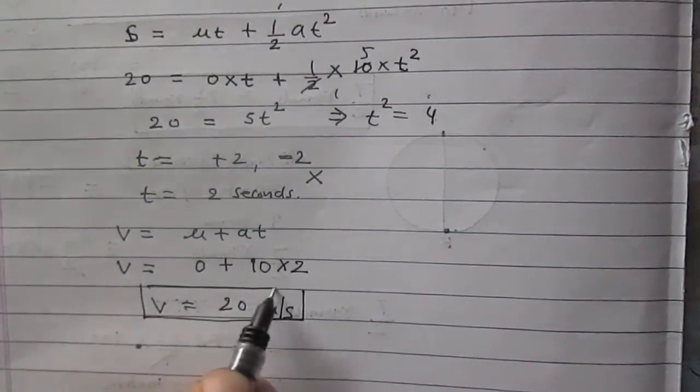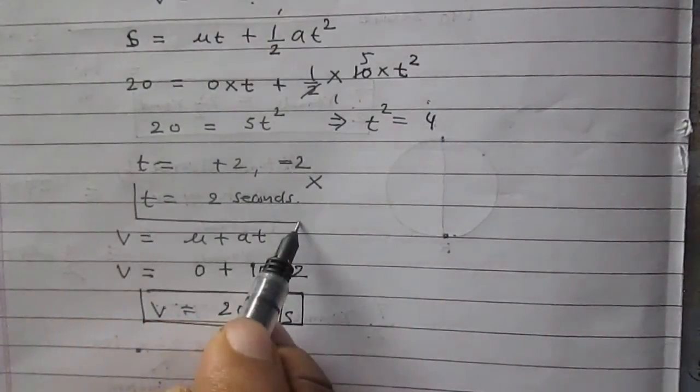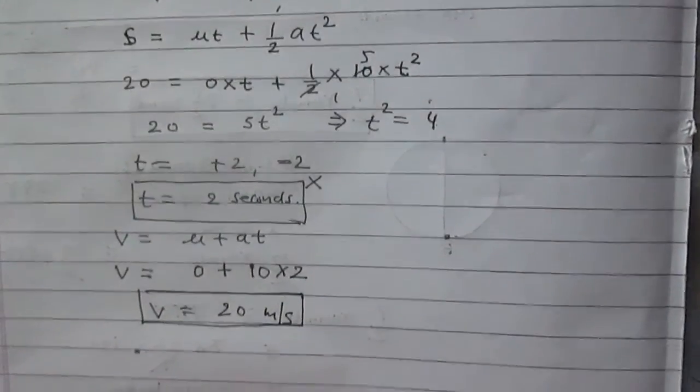Final velocity of the ball is 20 meter per second, and it will take 2 seconds to reach the ground. Let me show it on screen as well. Here you go. Thank you.